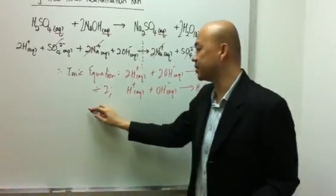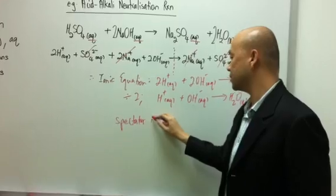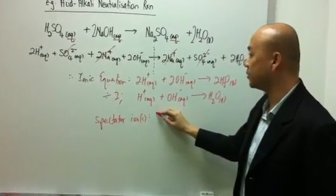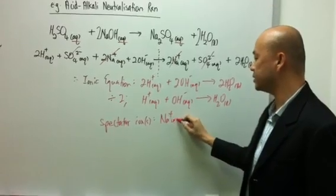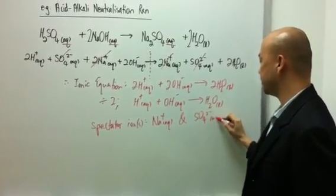And again, sometimes the examiners would like to ask you what are the spectator ions. And in this case, it will be the ions that you cancel off. That will be Na+ ions and your SO4 2- sulfate ions.